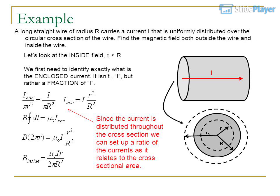Since the current is distributed throughout the cross section, we can set up a ratio of the currents as it relates to the cross-sectional area.